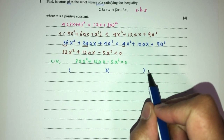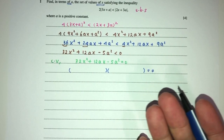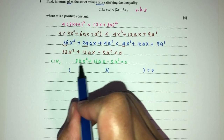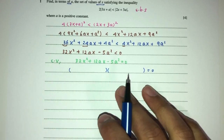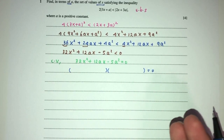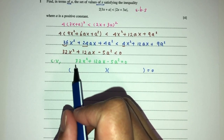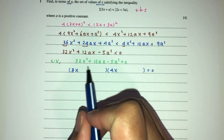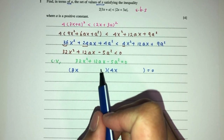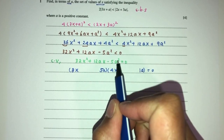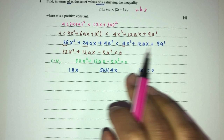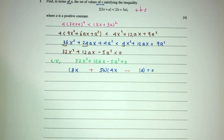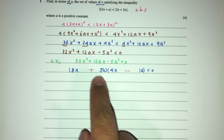Now factorize. For this kind of question you can solve by factorization or by using the formula. 32 is 8 times 4, and 5 is simply 5 times 1. We place 5a and 1a accordingly. To get plus 12, we need plus 20 minus 8, so minus 8 plus 20 gives plus 12.